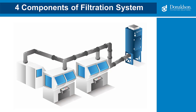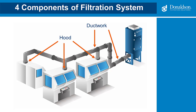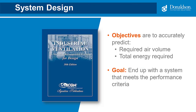There are four main components to mist filtration: the hood used to capture the mist, the ductwork to convey that mist to the filtration device, the filtration device to clean the air, and then the fan which moves the air throughout the entire system. If you incorrectly design any of these components, your system may not perform to expectations. When designing an industrial ventilation system — which is totally different from an HVAC system, since HVAC moves clean air while we are moving material — we have two main objectives: accurately predict the CFM required to effectively capture and control mist at the point of generation, and minimize the total energy required in horsepower to produce those airflows.